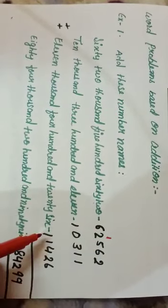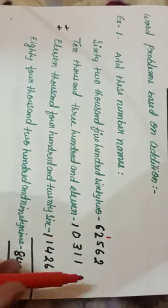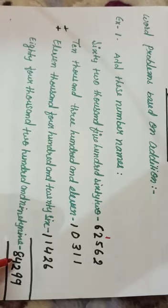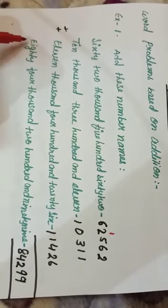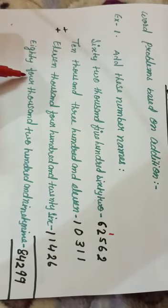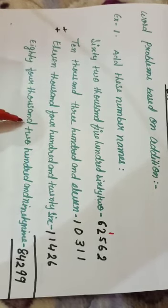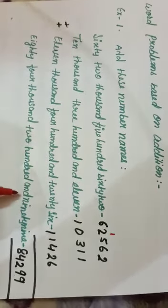6 plus 1 plus 1 is 8. We write 84299. And this sum, we will write in numbers name 84,299.